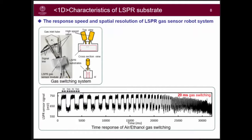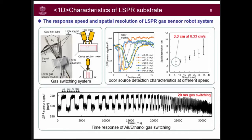Here is the high-speed gas switching system to test its response speed, showing a 20-millisecond gas switch speed. When equipped on a robot, it shows a 3.3-centimeter spatial resolution and a speed of 6.33 centimeters per second, calculated with the 5% peak method.